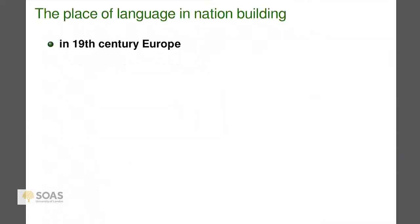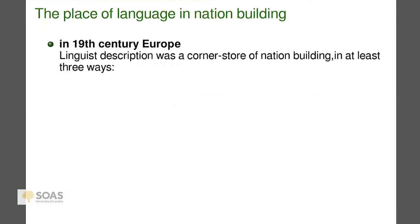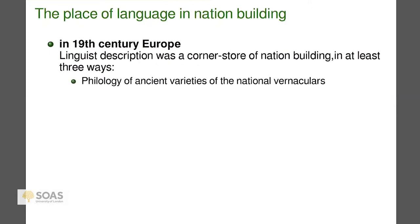I will look very briefly at the relationship of language to nation-building, comparing 19th century Europe with modern Asia as context for fieldwork and language documentation. In 19th century Europe, linguistic description was a cornerstone of nation-building in at least three ways. One was philology of ancient varieties of national vernaculars — think of the Germanic sagas. One way you were a nationalist was to look at what was the medieval poetry in your vernacular.